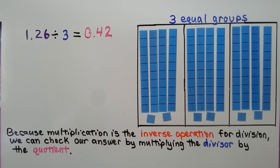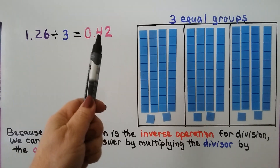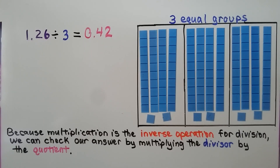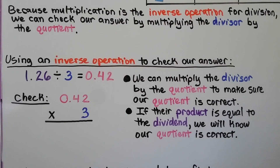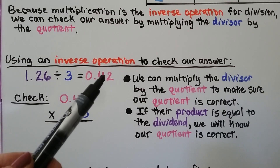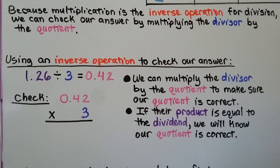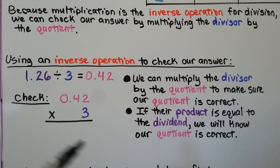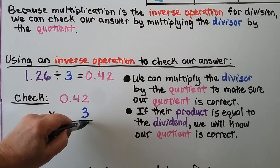Because multiplication is the inverse operation for division, we can check our answer by multiplying the divisor by the quotient. Using an inverse operation to check, we multiply the divisor by the quotient to make sure the quotient is correct. If the product equals the dividend, we know our quotient is correct. We start by doing three times two, which is six.